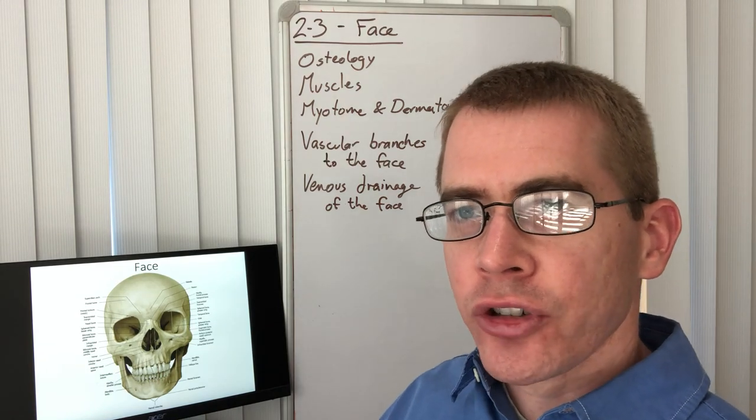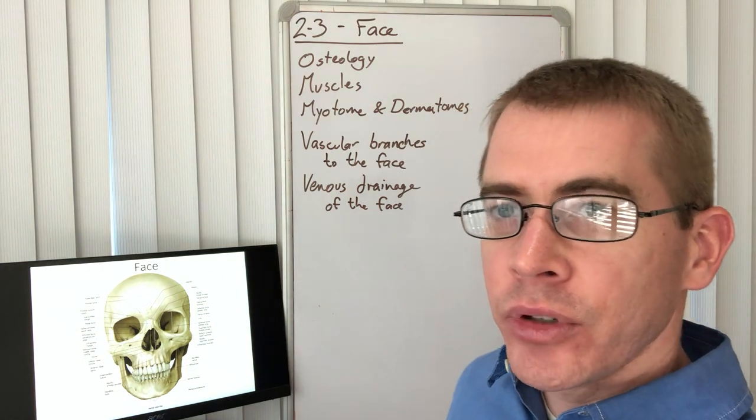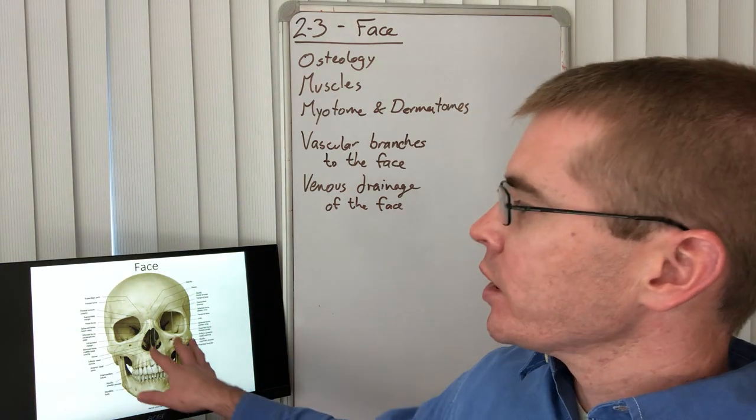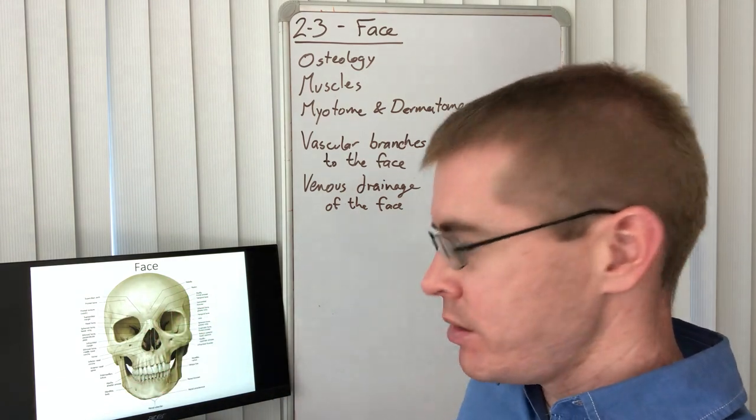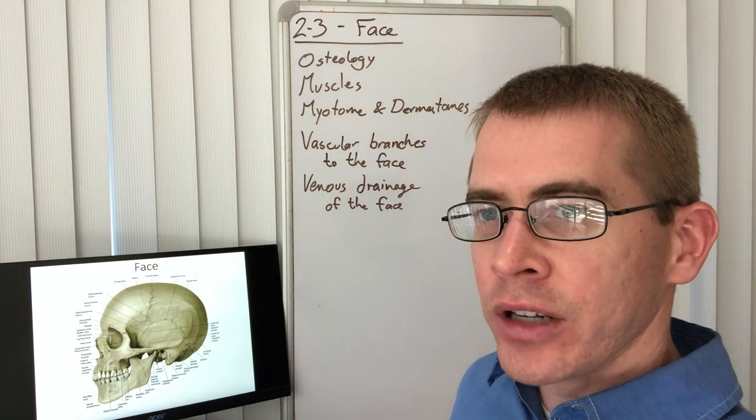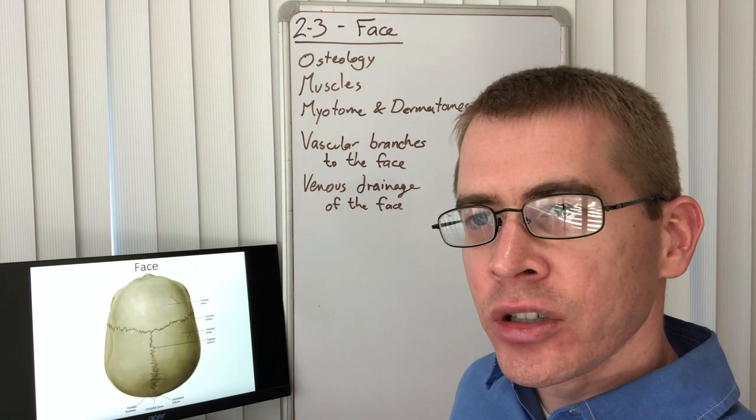Alright, let's talk about the face, lecture 2-3. Osteology - remember your osteology, review it if you don't. We're going to need to understand all of the foramina of the face and the cranium, because that's important for these cranial nerves. Take a look at all of this information again.